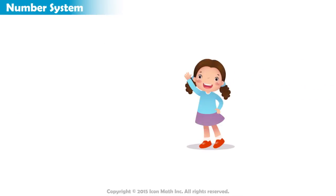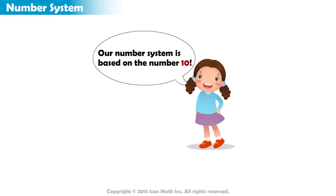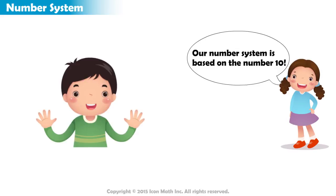Fingers were the first calculator that humans used. Our number system is based on the number 10 because humans have 10 fingers.